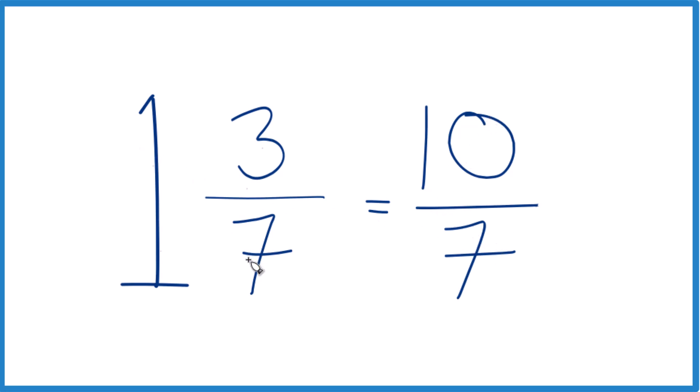Let's do it again. 1 times 7, that's 7. 7 plus 3, that gives us 10. That's our numerator. Bring the denominator across. You got it.